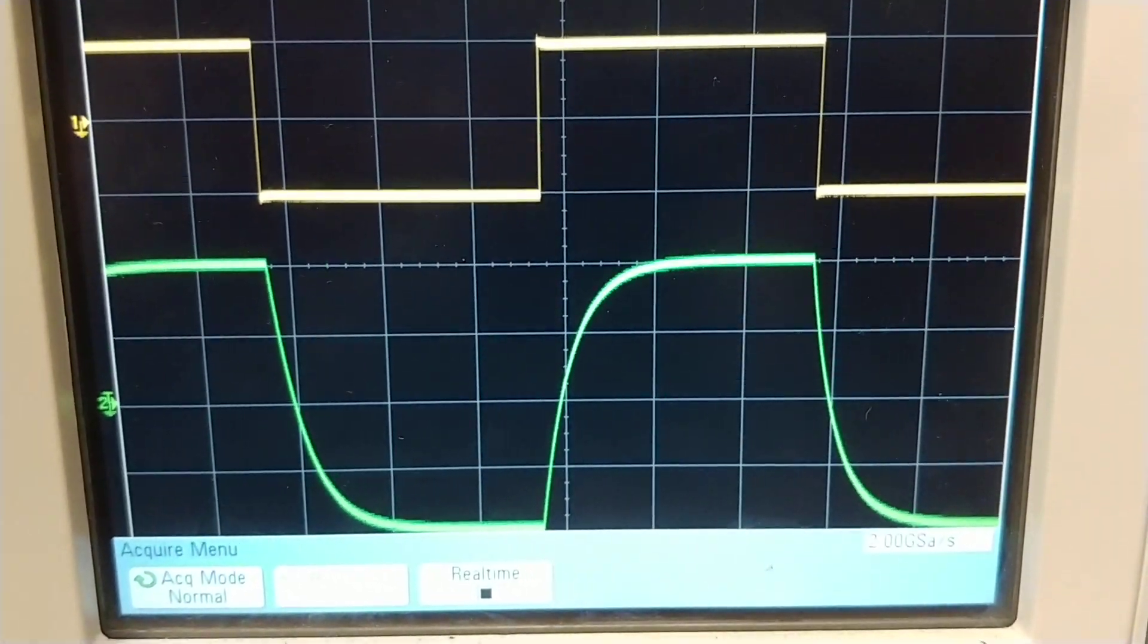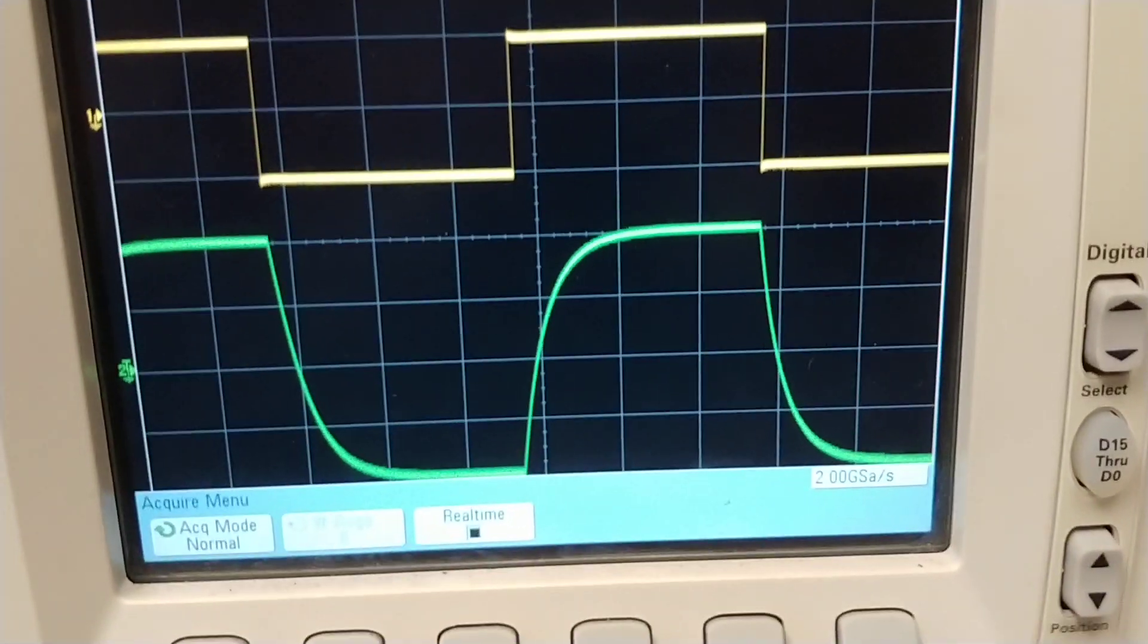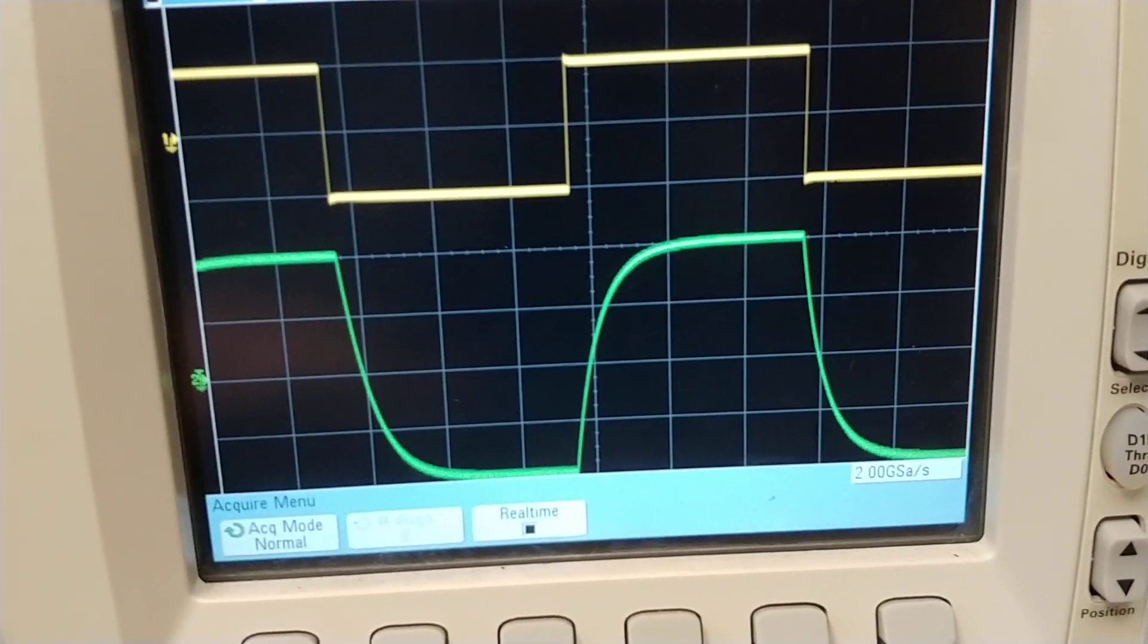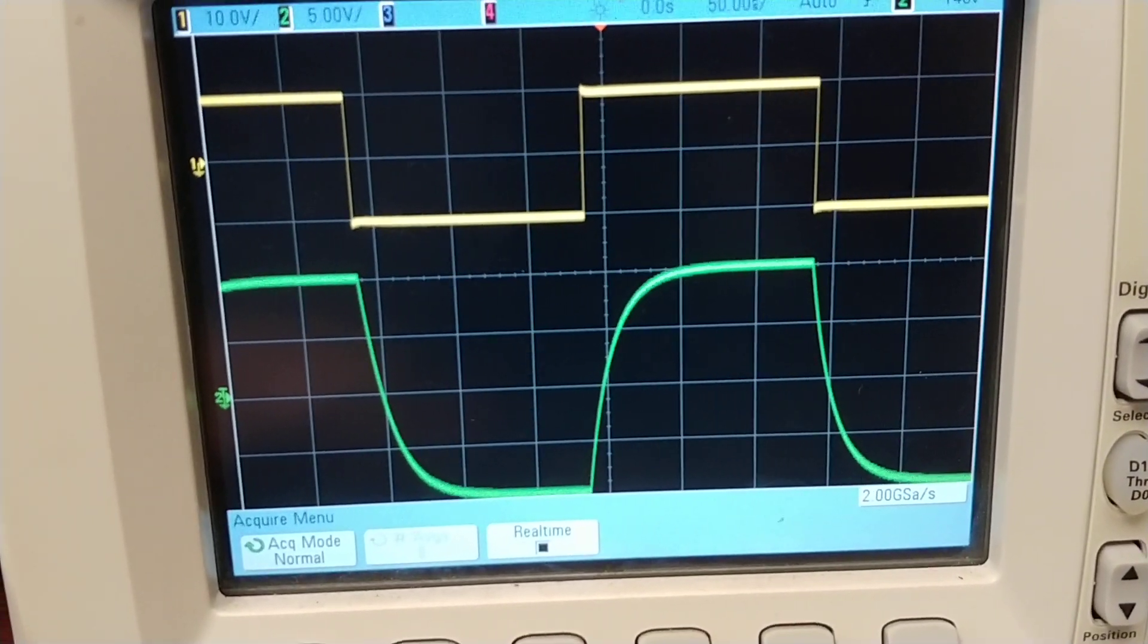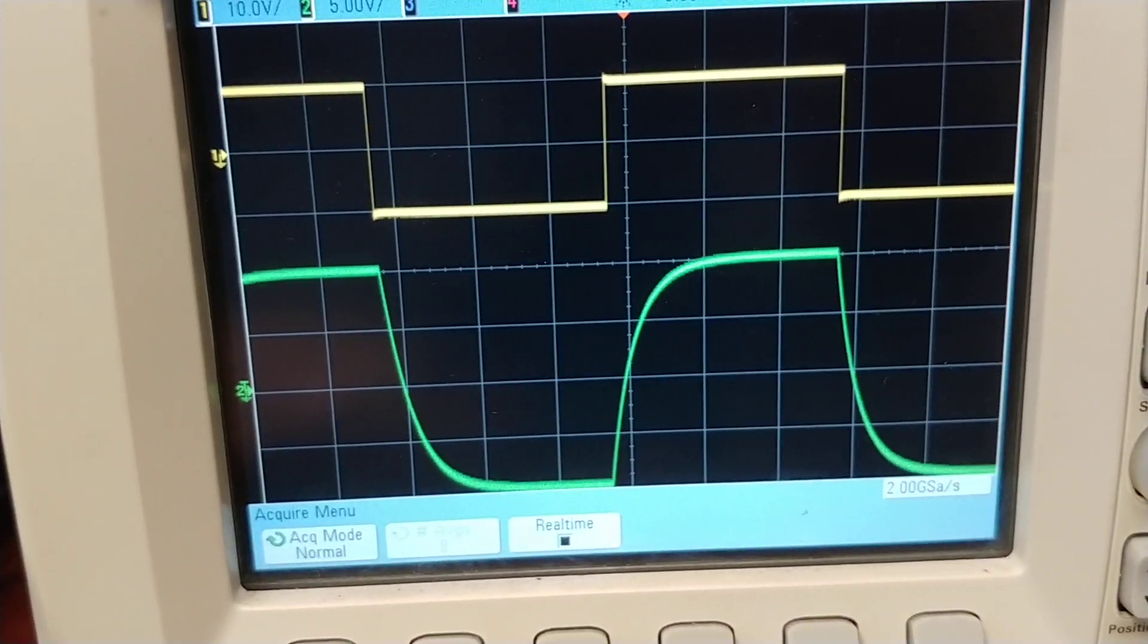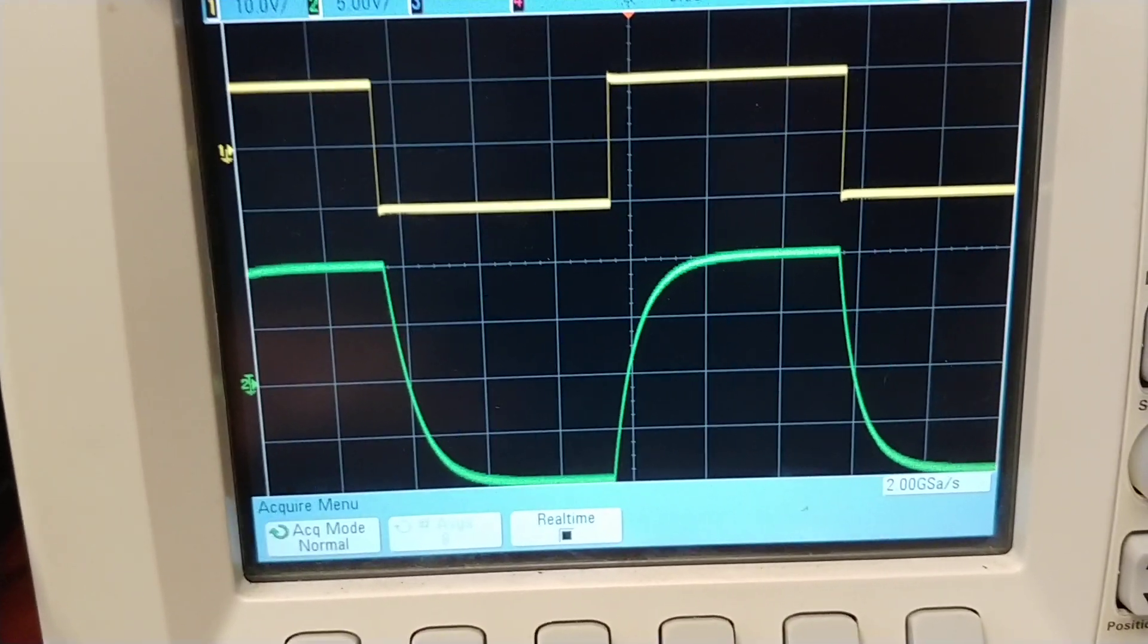I would like to measure the rise time using the step response with a function generator and an oscilloscope. Now of course there isn't just a step response, it's more of a pulse so you go up and down.